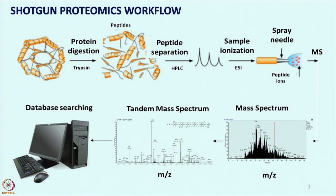The very first step is protein digestion using enzymes like trypsin. Once proteins have been digested they form peptides. These peptides are separated using HPLC and then samples are ionized using an ionization source like electrospray ionization. The ions move inside the mass analyzer generating a chromatogram based on m/z values. This information is used to search databases and perform protein identification. That is a nutshell of the shotgun proteomics workflow.